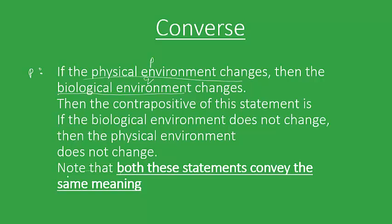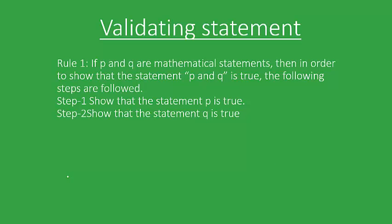Now the most important part of the chapter is validating statements. We have discussed what statements are and the various meanings of the symbols used in making a statement. Now we come to see how to decide whether a statement is true or false. As we discussed in compound statements, Rule 1 states that if p and q are mathematical statements, in order to show that the statement 'p and q' is true, we have to show individually that p is true and q is true.